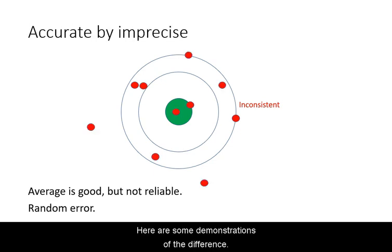Here are some demonstrations of the difference. In this example, the average of all measurements is very near the correct answer. However, because each measurement is far from the others, this is very inconsistent and hence imprecise. This is usually an indication of a random source of error.